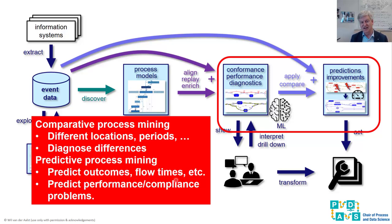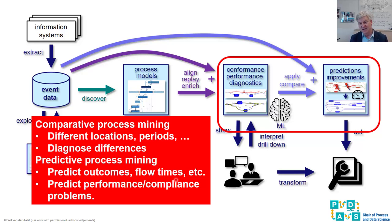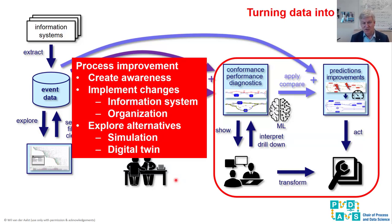When you see a frequent deviation you can use further techniques to understand what those deviations have in common. The same applies to performance analysis: by replaying event data on top of the models, you see where the bottlenecks are and can try to explain what causes them. If you have models enriched with information about bottlenecks and resources, you can use them to do predictive process mining — using the model in a forward-looking manner — or comparative process mining, comparing the same process in different months or between two offices to understand why things work well in one place but not another. That is the forward-looking, predictive side of process mining, very much related to operational support.